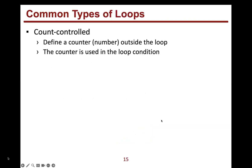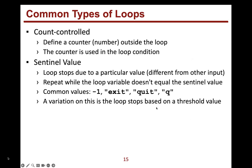There are different types of loops even within while loops. One is called count-controlled: we define a counter — a number, an integer — outside the loop, and that counter is used in the loop condition, just like in our blastoff example. We can also use a sentinel value, meaning the loop stops due to a particular value, called the sentinel or stop value.